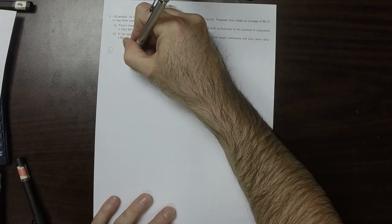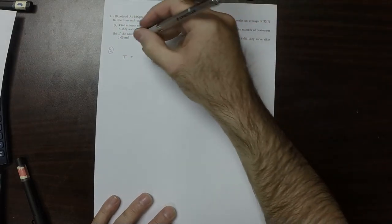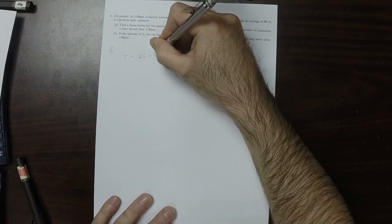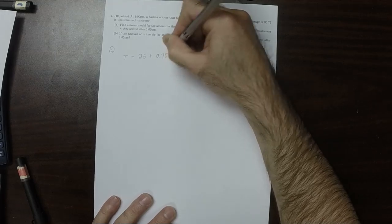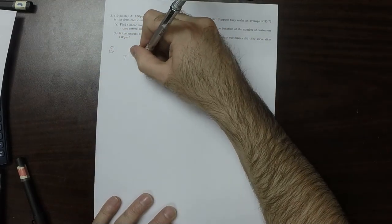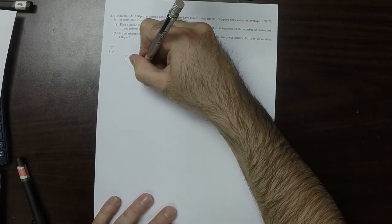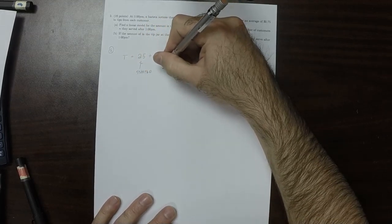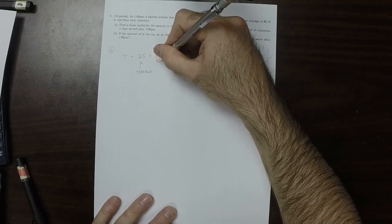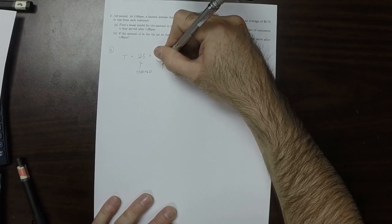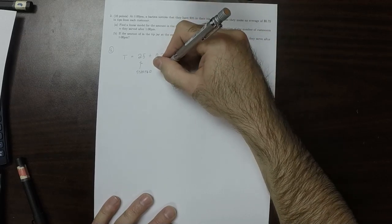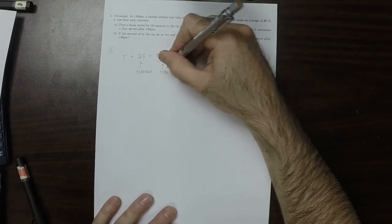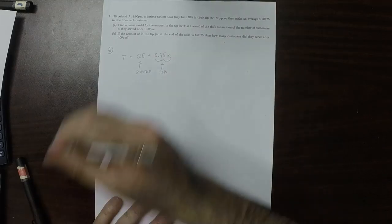So that's saying that T equals 25, because that's what we started with, plus 0.75n. This 25 is what we started with, and this 0.75n represents the tips per customer multiplied by the number of customers.